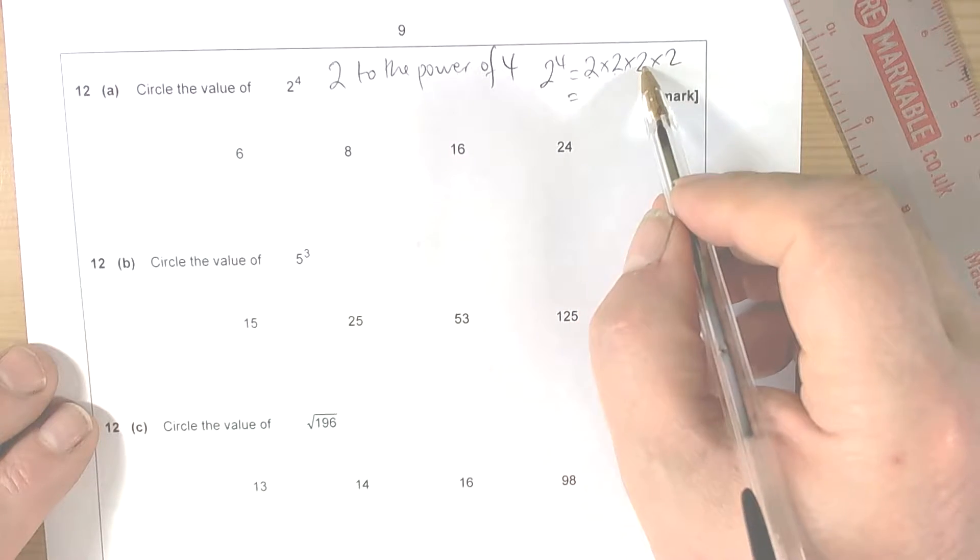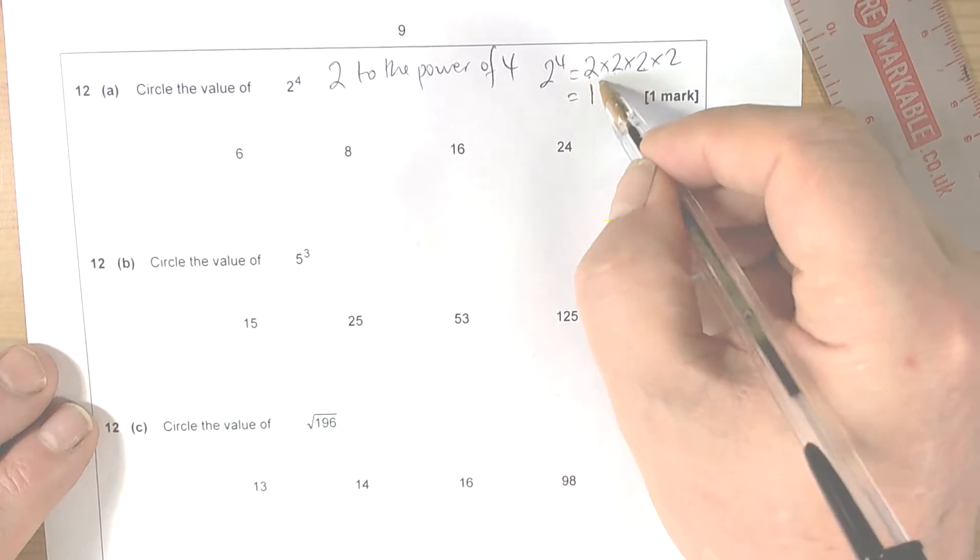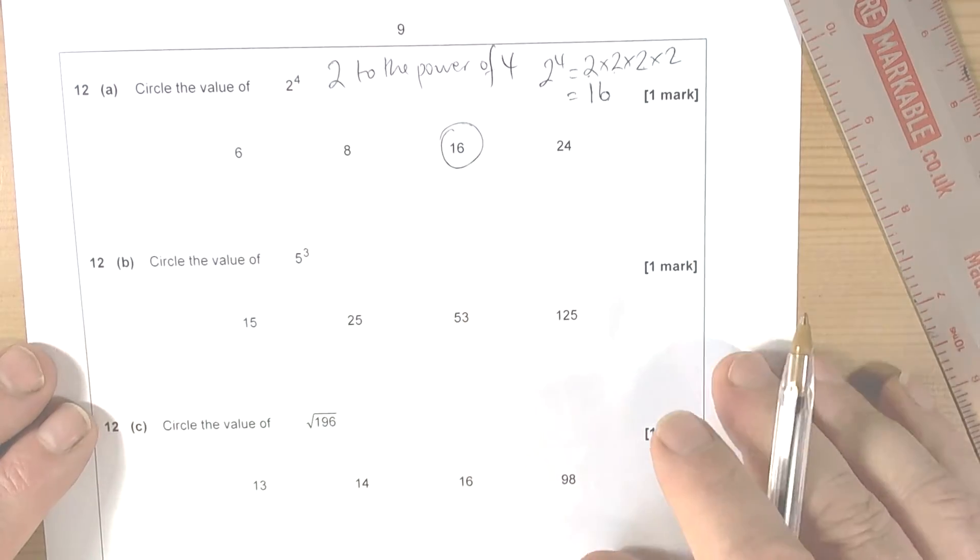And when we do that in our heads we end up with 16. 2 times 2 is 4, times 2 is 8, times 2 again is 16. So that would be the correct answer for that one.